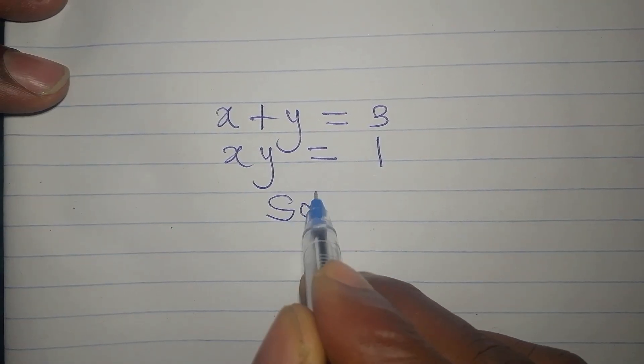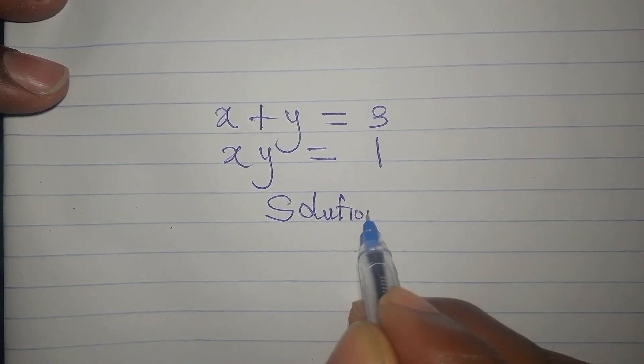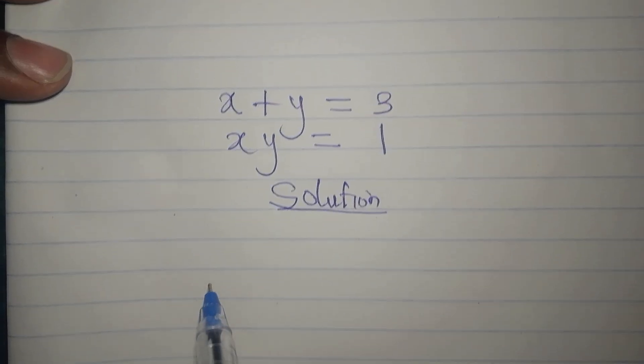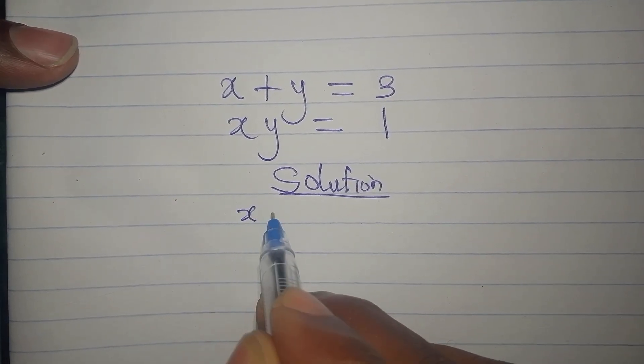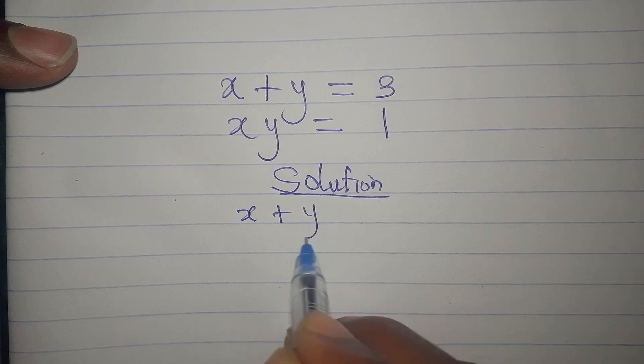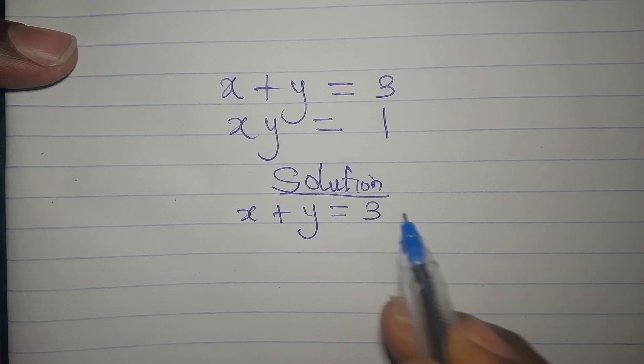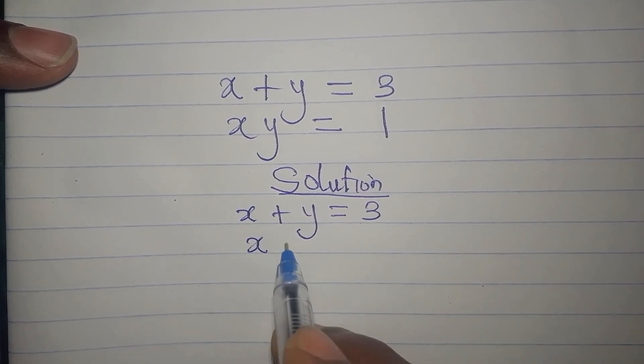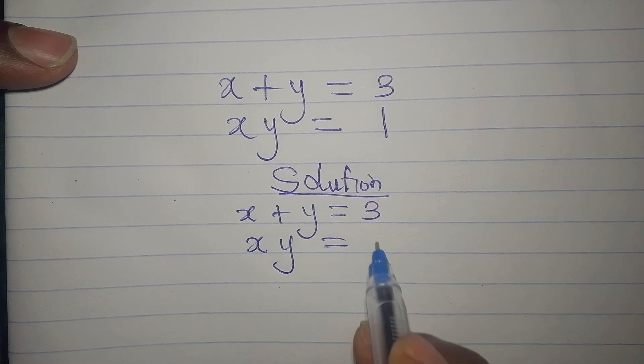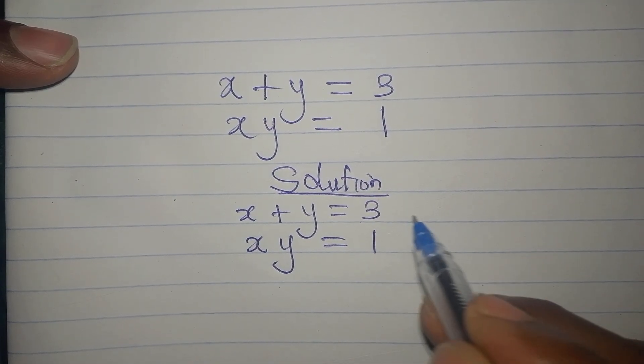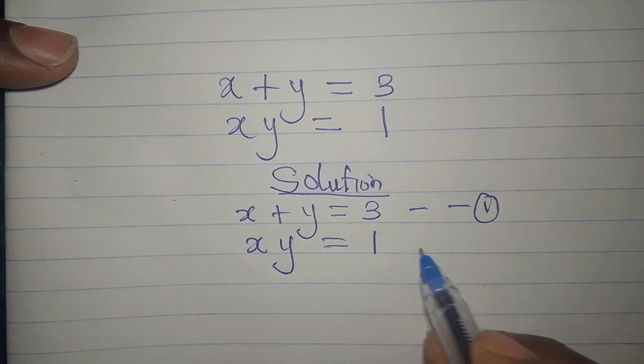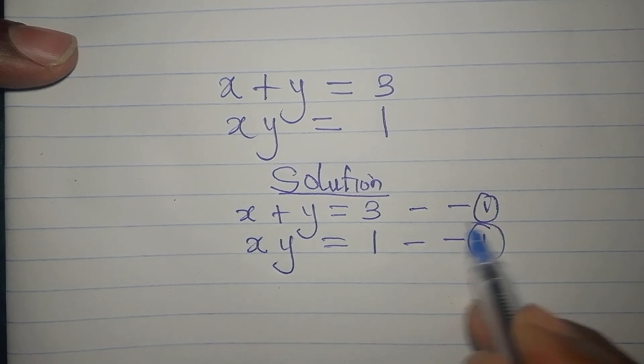Hi everyone, let's provide the solution here. We have x plus y equals 3, then x times y equals 1. This is our equation 1 and this is our equation 2.